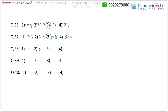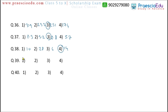Question 38: the options are 10, 28, 6, and 14. Among these, 10, 28, and 6 are triangular numbers, but 14 is not a triangular number. So option 4 (14) is the different one for question 38.